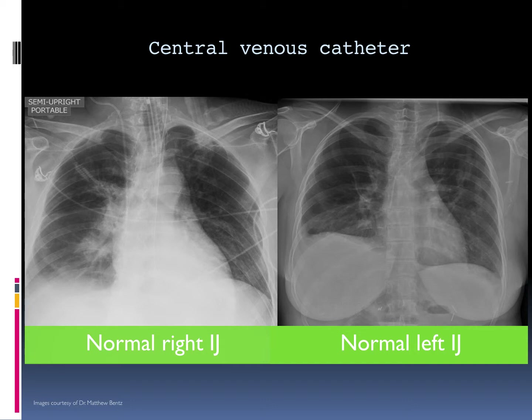whereas the left internal jugular vein catheter first has to cross the midline over to the confluence of the right and left brachiocephalic veins, and then course downward to the expected location of the cavoatrial junction.